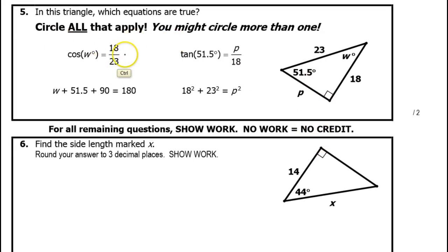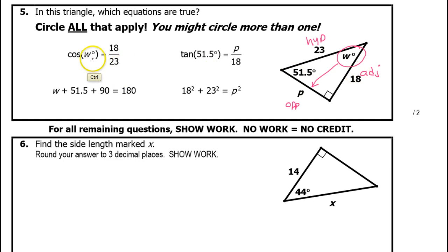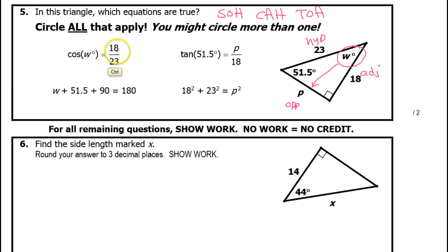Circle all that apply. Cosine of W: we're looking for equations that are true. They're mentioning angle W, so I'm going to circle that. 23 is the hypotenuse. The side across from W is the opposite side, and the side next to W is the adjacent side. Cosine — remember SOH CAH TOA — cosine is adjacent over hypotenuse, so that would be 18 over 23. And that is what we have, so that one is true.